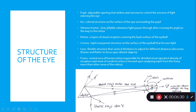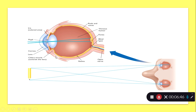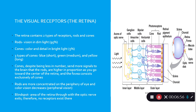Light rays enter the eye, the cornea and lens focus them, they hit the back of the eye and are reflected — actually turning upside down, so you see everything inverted. The retina contains two types of receptors: rods and cones. Rods are for vision in dim light; cones are for color and detail in bright light. About 95% of receptors in your eyes are rods and only 5% are cones.